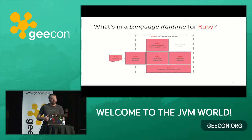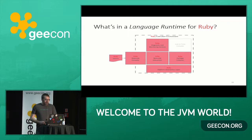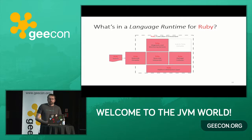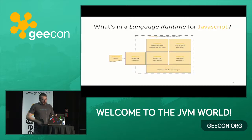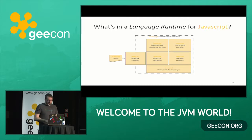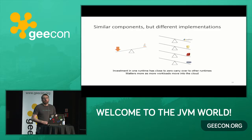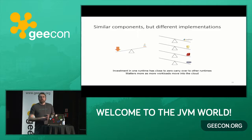If you look at a Ruby VM, you notice a lot of the same components — interpreter, garbage collector, platform services, and diagnostic services. MRI Ruby doesn't have a JIT, but the rest are all there. And a JavaScript VM similarly has all the same components. With all these different VMs, they all have very similar components but different implementations, so effort improving one runtime — like adding a JIT optimization for Java — provides no uplift to the others.